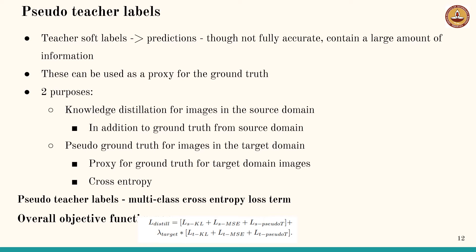Although the teacher predictions are not totally accurate, they nevertheless perform better than the undistilled student network. We use pseudo-labels from the teacher which serve two purposes: knowledge distillation for images in the source domain, and pseudo-ground truth for images in the target domain where the problem is completely unsupervised. The power of these pseudo-labels is chiefly exhibited in the case of the student target domain, wherein teacher pseudo-labels serve as a proxy for the ground truth.